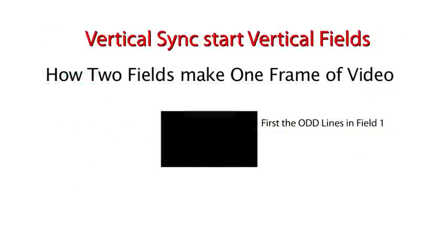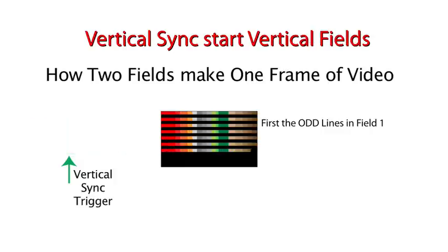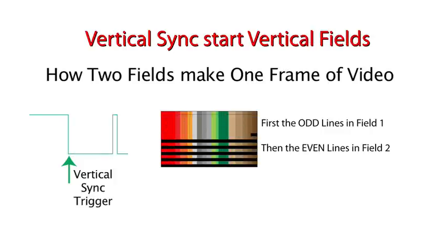As stated before, frames are broken into two fields, each carrying one half the lines. The first field begins at the top of the screen displaying all of the odd lines. When the second field begins, it shows all the even lines. Combined, they display an entire frame of video.